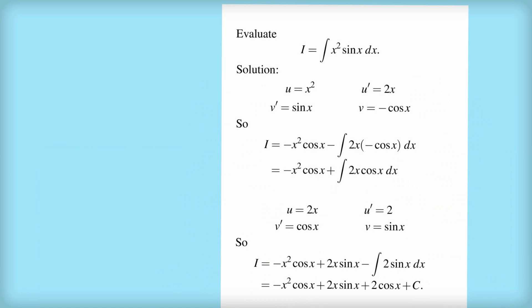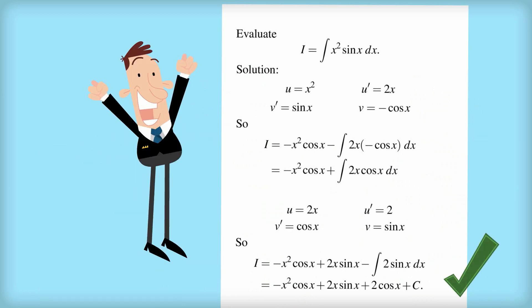And that's an easy integral to work out, and so now we can finish it off by saying that I equals negative x squared cos x plus 2x sine x plus 2 cos x. And don't forget the constant, and then you get full marks.